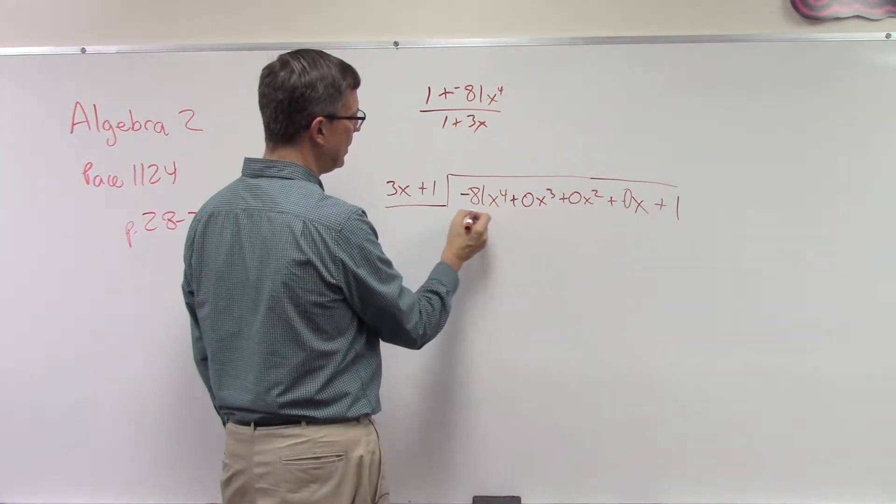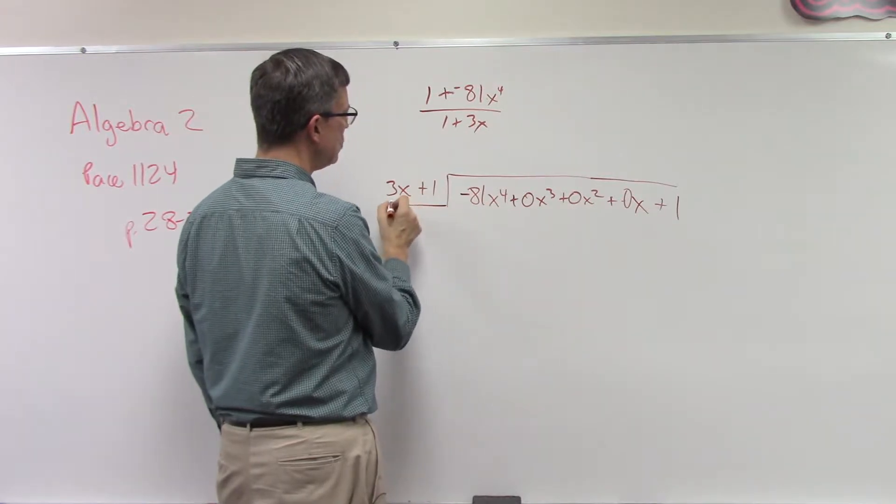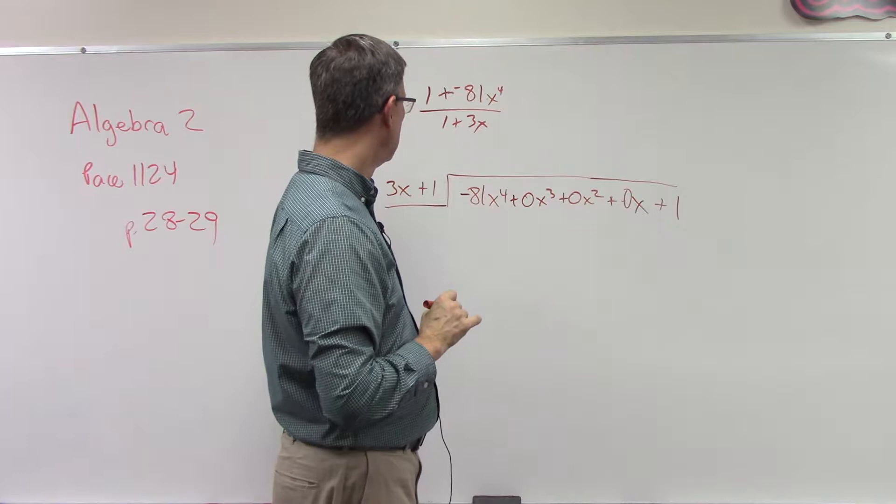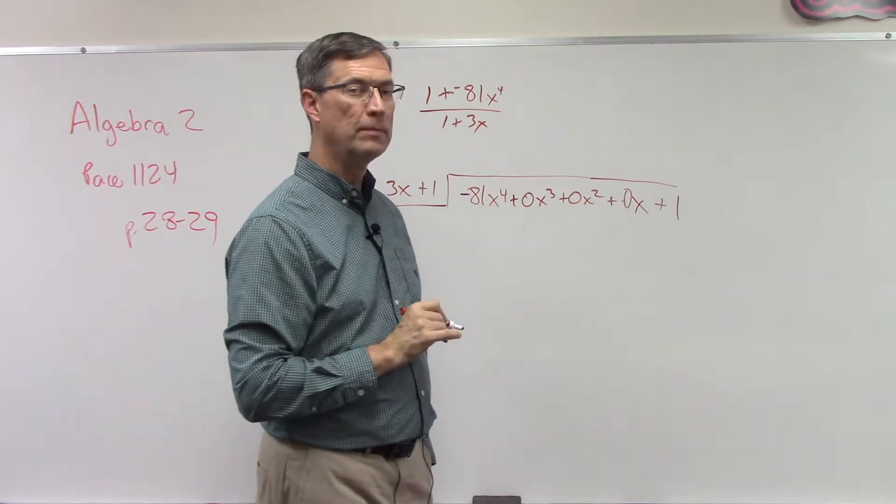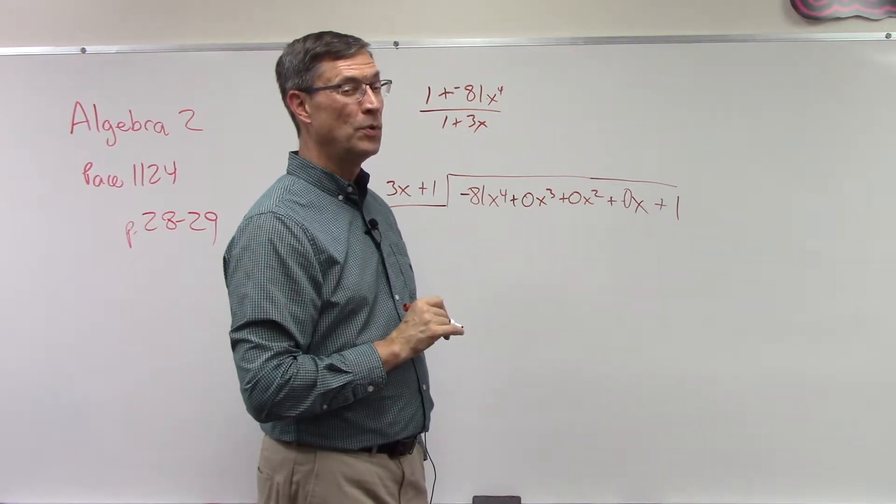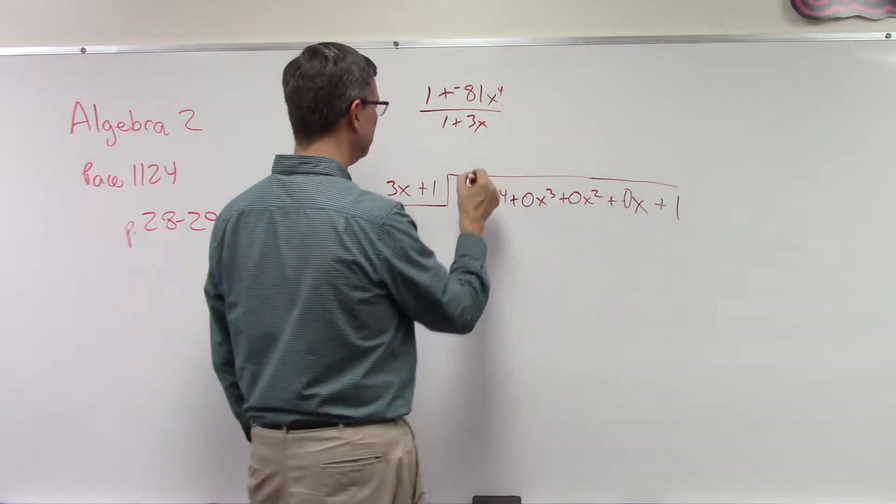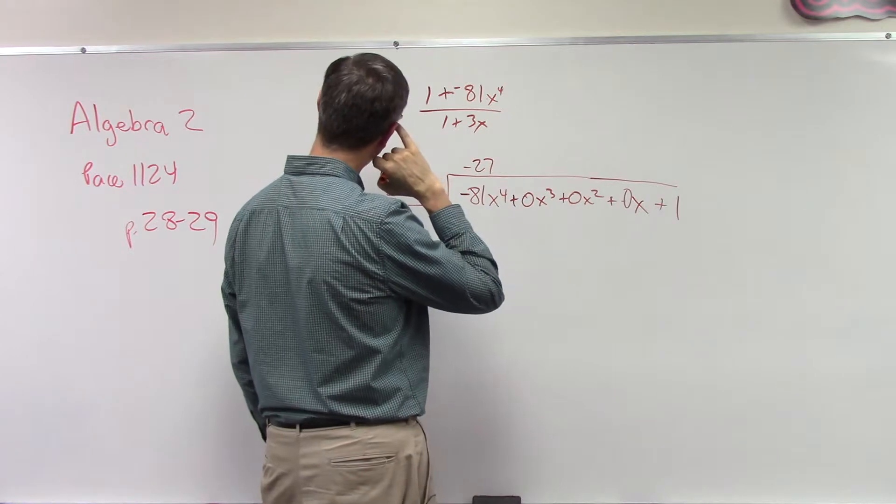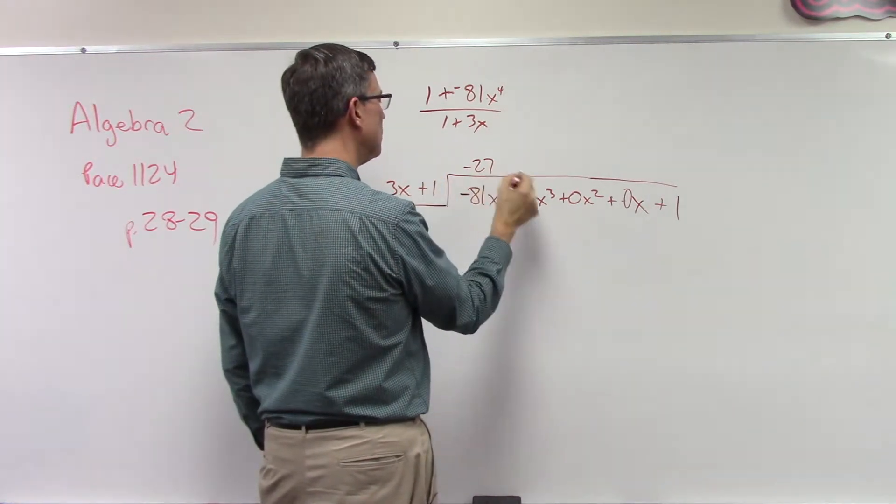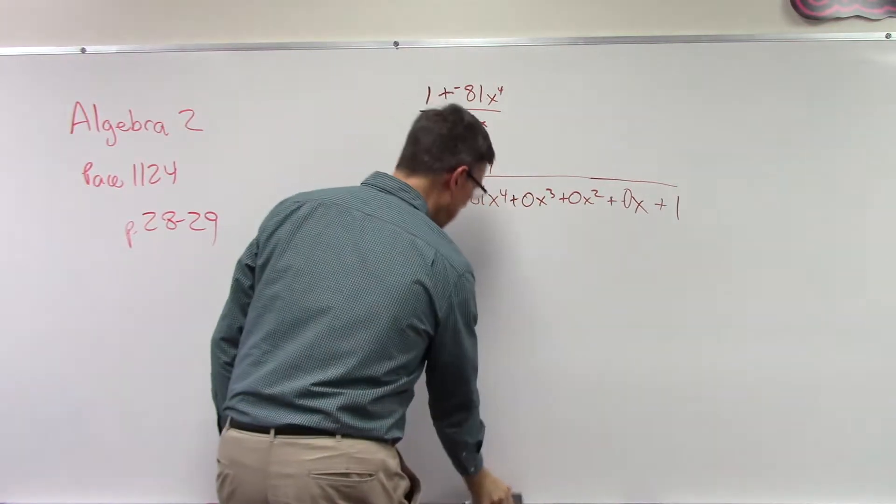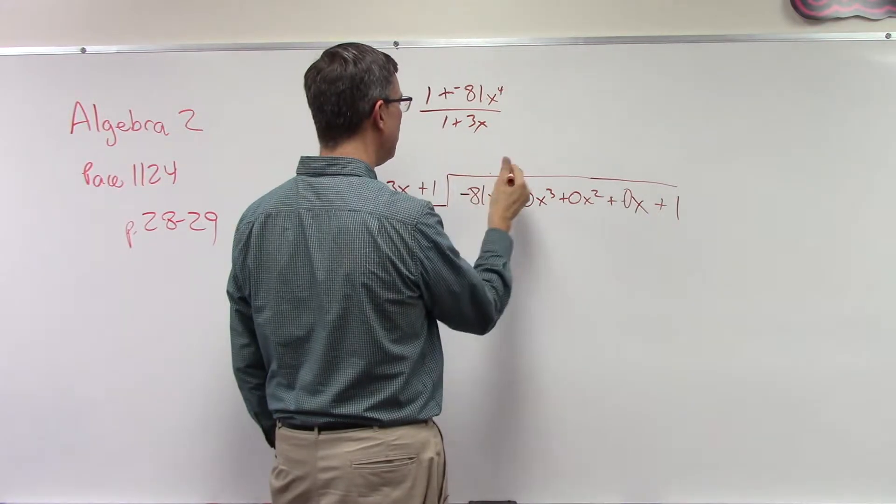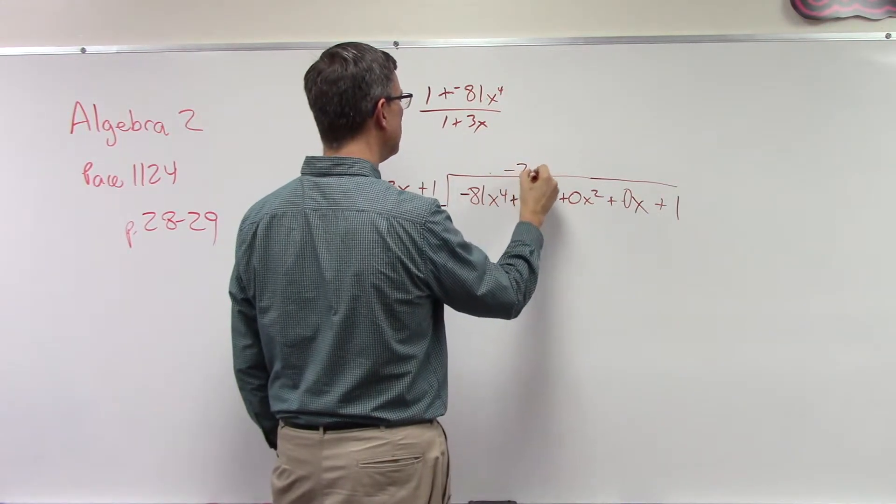Now I'm going to take these two, I'm going to switch the order because I want to do divided by 3x plus 1. Now we're going to take just this term right here and divide by just the 3x. That's all we're going to look at. What is 81 divided by 3? I want to say it's negative 27. And then x to the fourth divided by x is going to be x to the third.